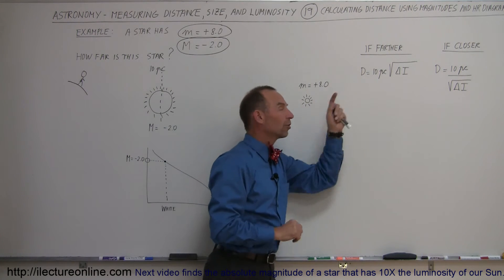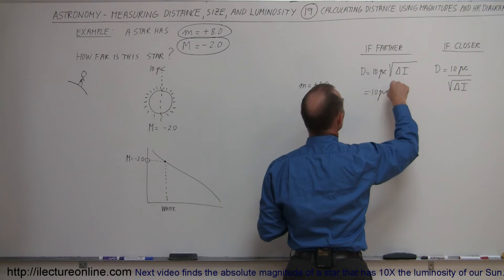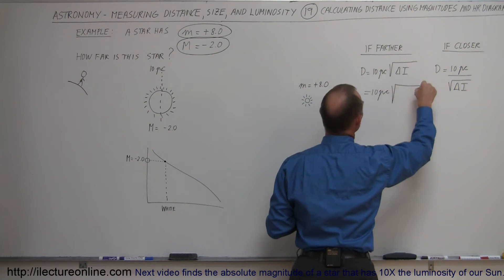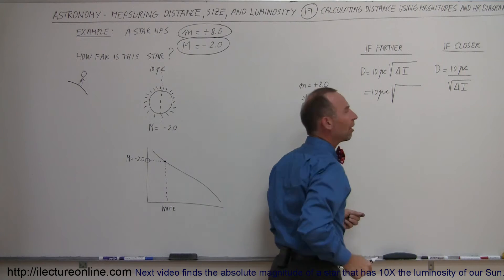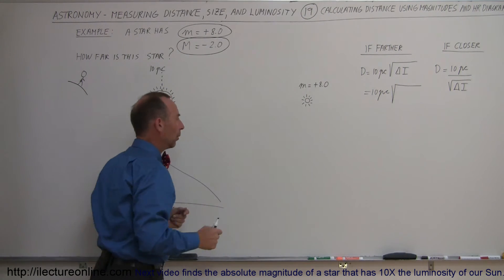So we're going to use this equation right here. And all we have to do is take the 10 parsecs and multiply it times the square root of the difference of the intensity between here and here. Wow! How do we do that?